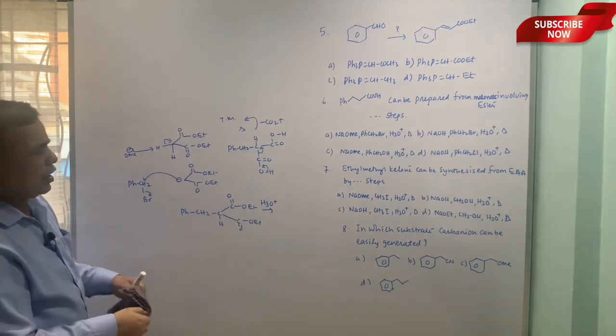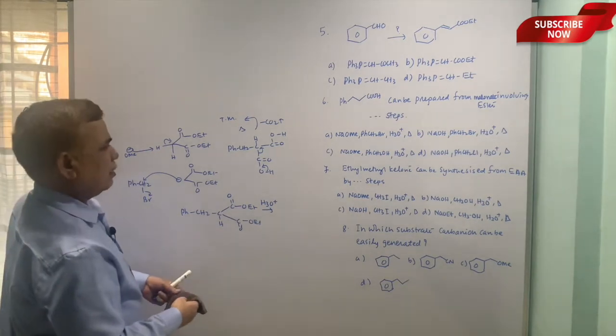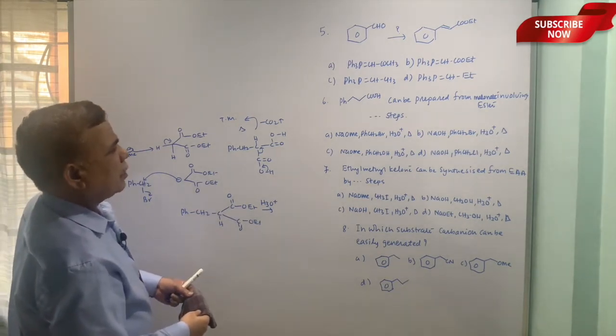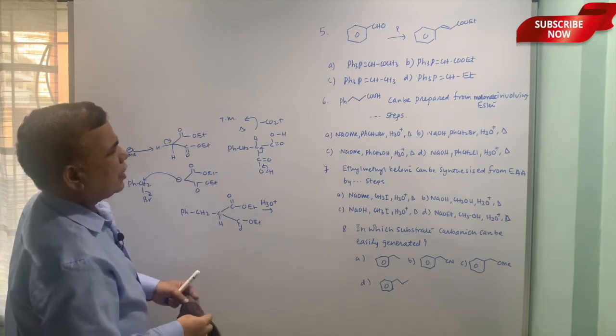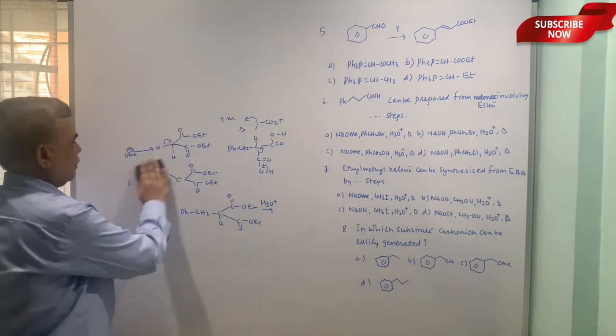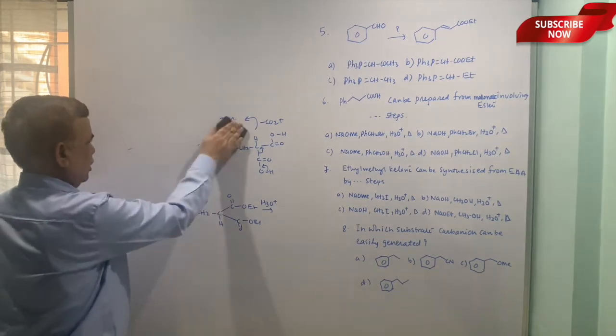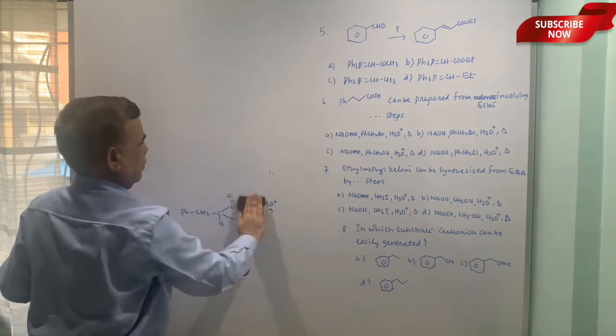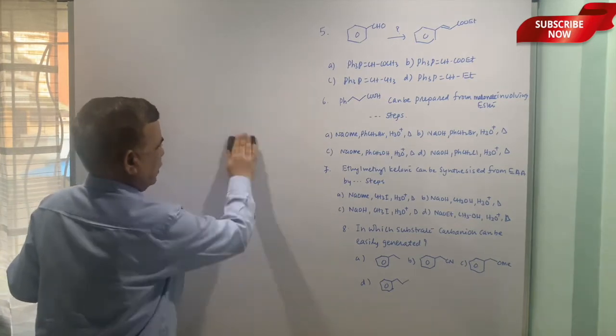So from malonate ester these are the steps. So first option is correct, that is benzyl bromide followed by hydrolysis and decarboxylation upon heating.